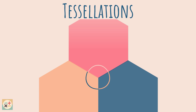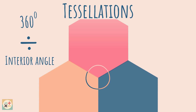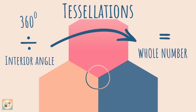Therefore, you should be able to divide 360 by the interior angle of the polygon and be left with a whole number. If you are left with a decimal number, the shape will not tessellate.